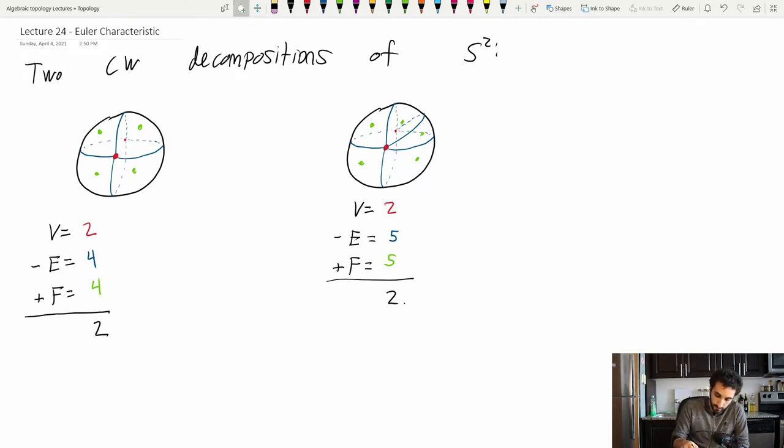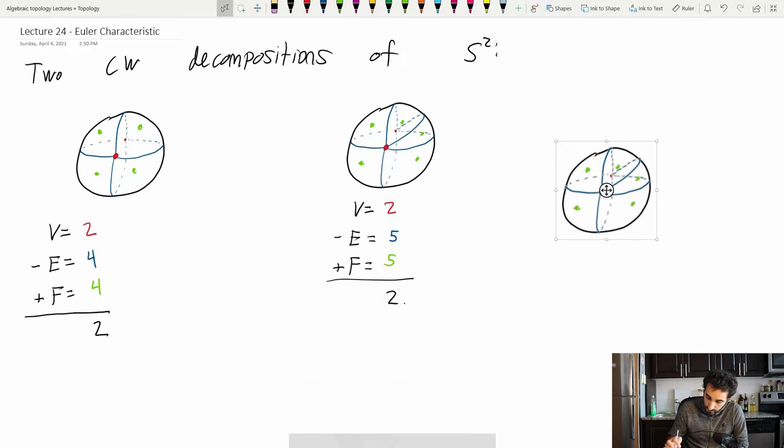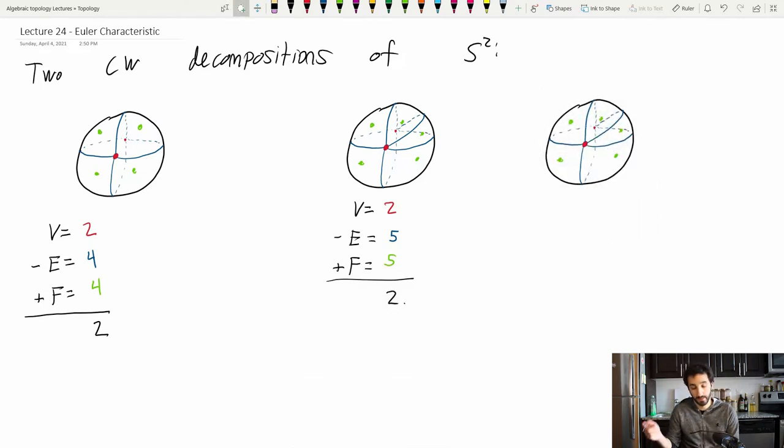Now how about we do one more variation on this. Let's see what happens if we chop an edge in half. Well that is going to add one extra vertex. So I'll now have three vertices. But it also added an edge. So that's six edges and I still have five faces. Add all of this up with alternating signs and what you get is two.